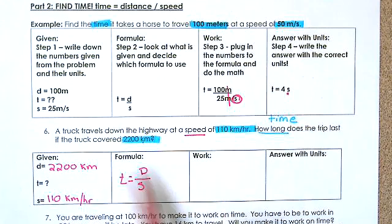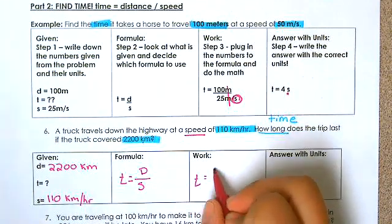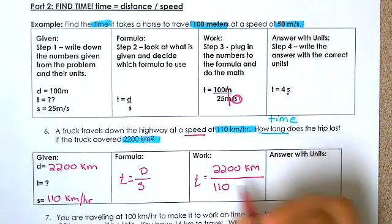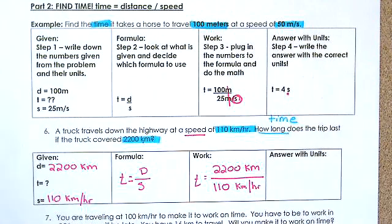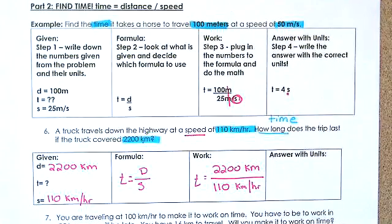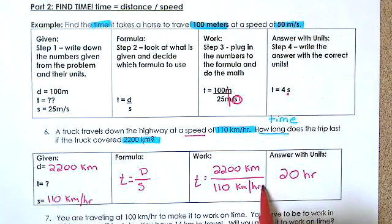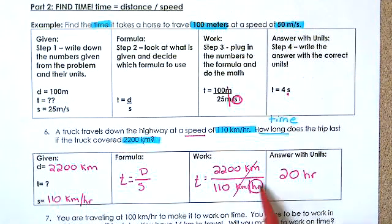We're looking for time, so: time equals distance divided by speed. Show your work: time equals 2200 kilometers divided by 110 kilometers per hour. Put 2200 in the calculator first, divided by 110, which gives you 20. Kilometers divided by kilometers cancels out, leaving just hours — so the answer is 20 hours.